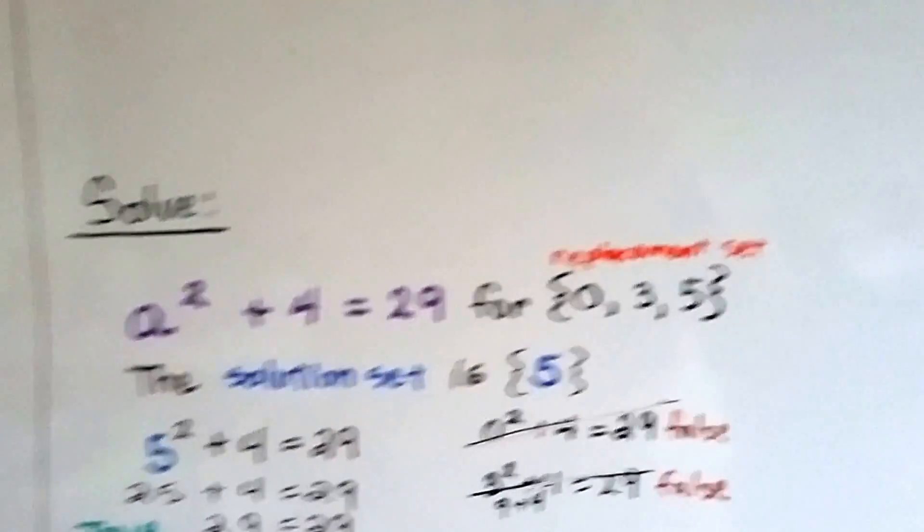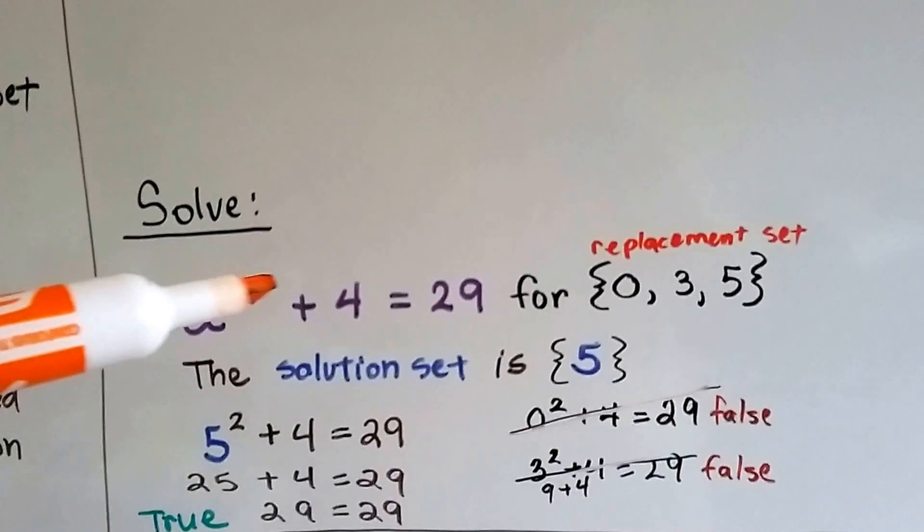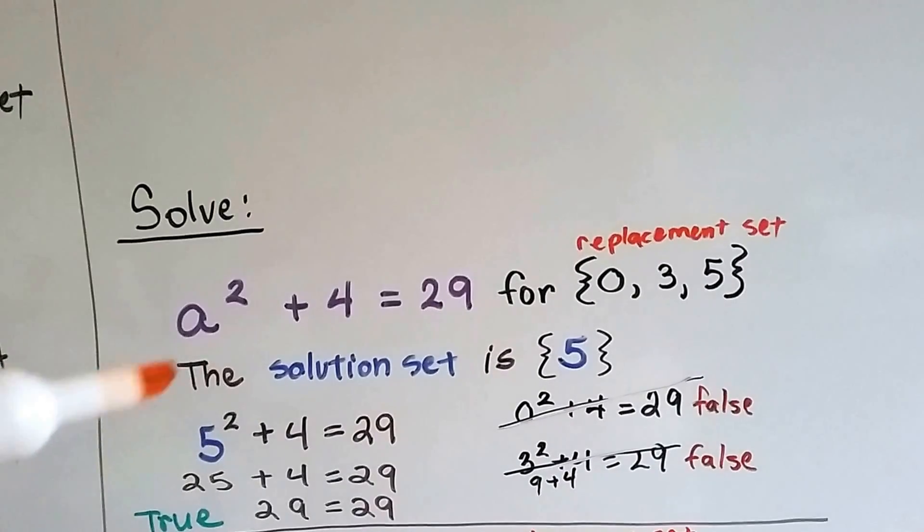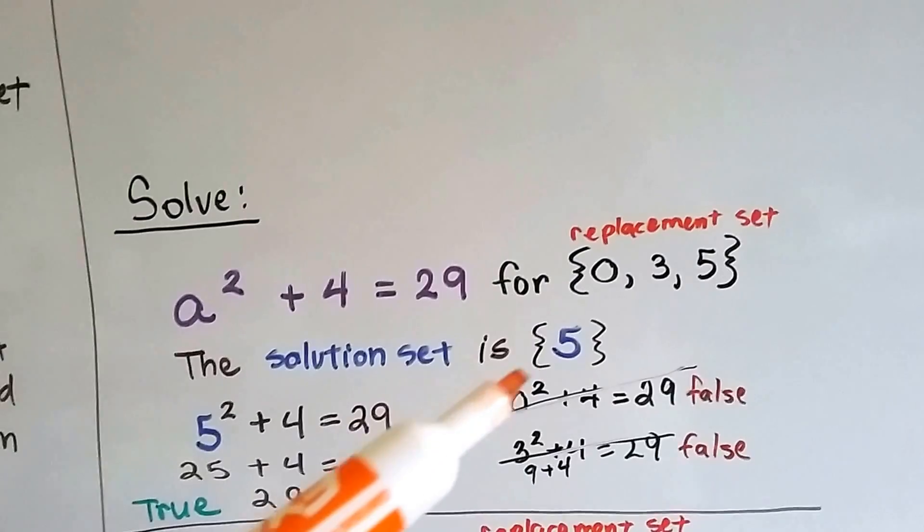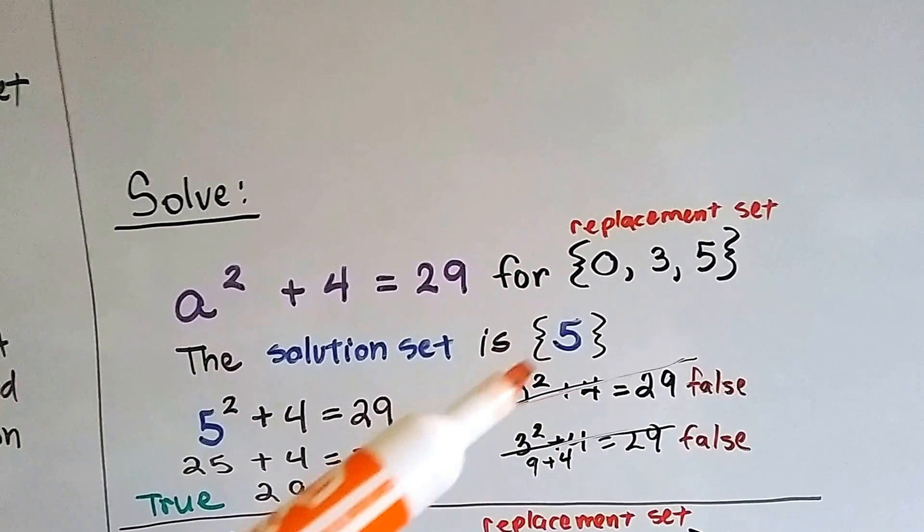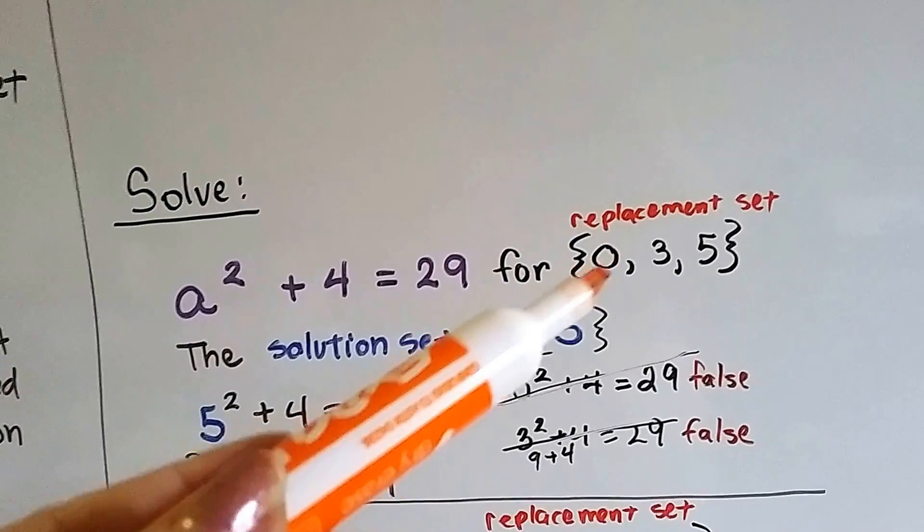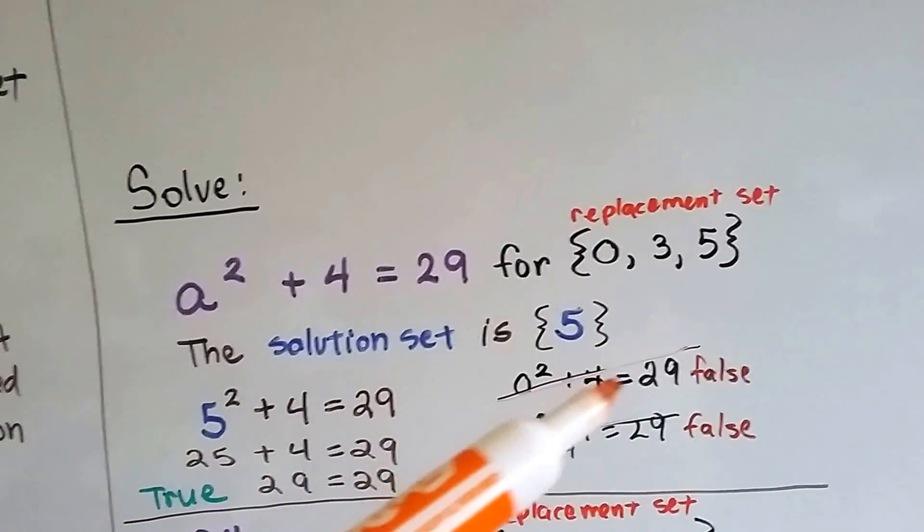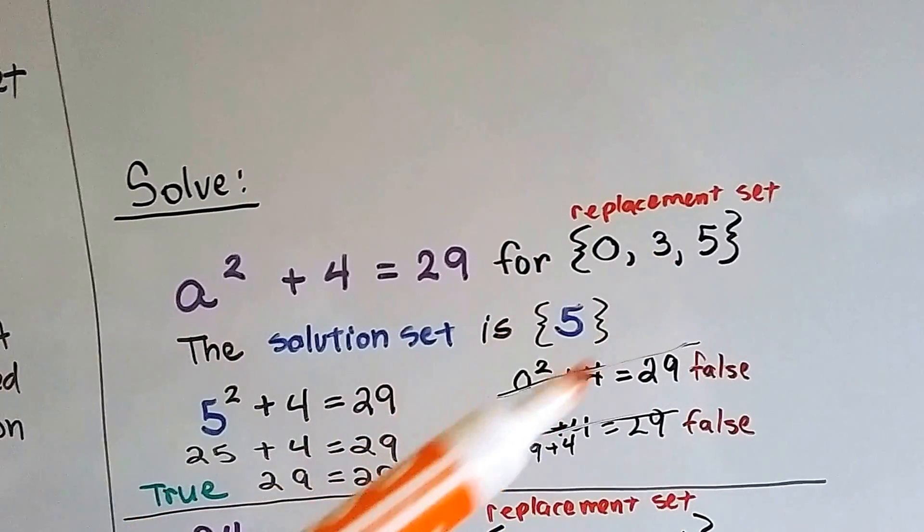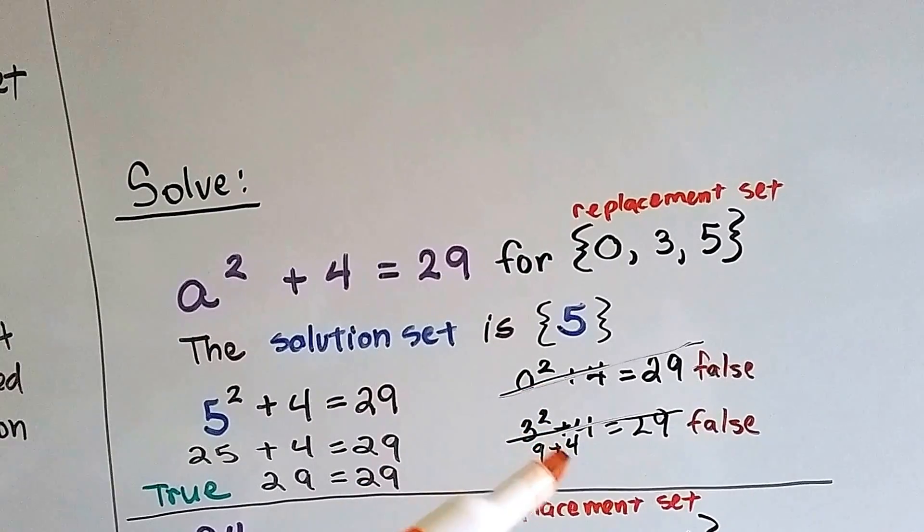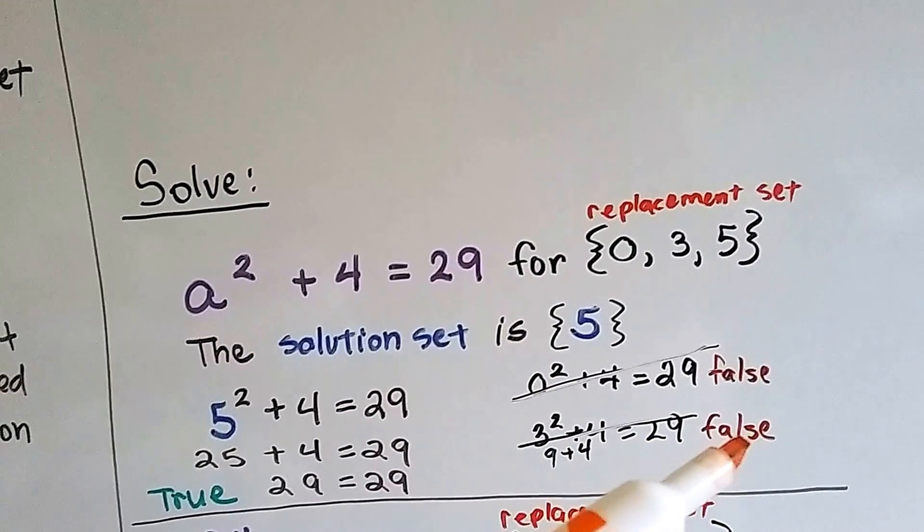So let's try solving this one. We've got a squared plus 4 equals 29. Well, if we do 0 squared plus 4, 0 times 0 is 0 plus 4 is 4. So 0 cannot be a solution because that makes a false statement. And if we use 3, 3 squared is 3 times 3. That's 9 plus 4 is 13. That doesn't equal 29, so that's false.